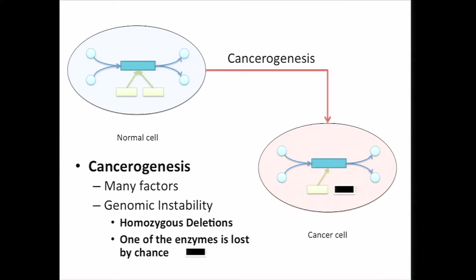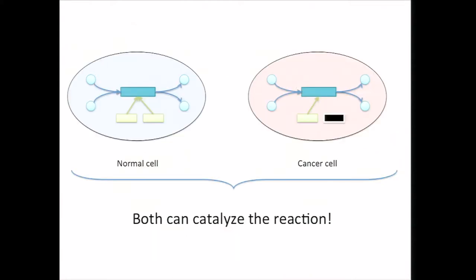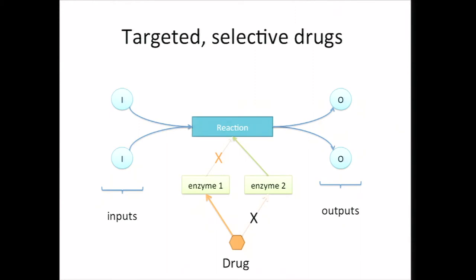Due to this deletion, the cancer cells don't have the metabolic enzyme anymore. Normally, under normal circumstances, both cells do fine — normal cells can still catalyze the reaction, and cancer cells as well, because there is still an intact copy of the enzyme. But an interesting thing happens when we perturb these cells. A perturbation of interest to us is where we introduce targeted and selective drugs. Here I'm showing a hypothetical drug represented by this orange octagon, and what this drug does is it basically inhibits enzyme one but not enzyme two.